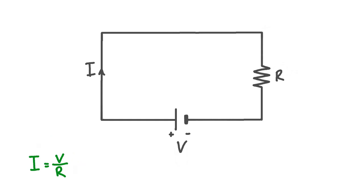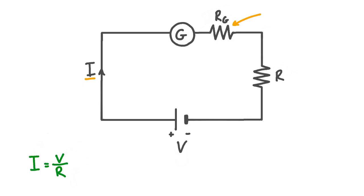Now let's see what happens if we introduce a galvanometer into our circuit to measure the current I. We'll say V and R are such that I is less than the full-scale deflection current of the galvanometer. Here's our galvanometer connected in series with the other components. Unfortunately, we run into a problem because the galvanometer has its own resistance. As soon as we connect it to the circuit, it changes the overall resistance of the circuit, and so it changes the current we were trying to measure. It's almost like having a ruler that changes the length of an object when we try to measure it. We can make this explicit by drawing an additional resistor with resistance Rg — the resistance of our galvanometer.